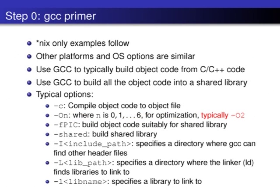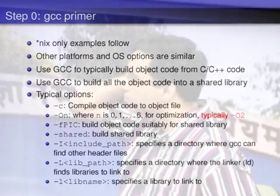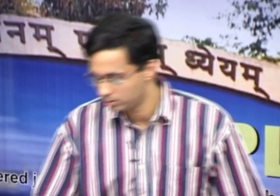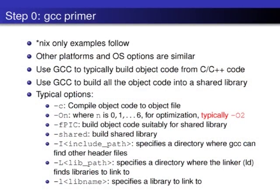Let's do a quick GCC primer. I'm only going to cover Unix since the lab session is also on Unix. On Win32 with Cygwin or MinGW things are pretty similar. I'm going to go through the details so you understand how it actually works underneath. A lot of this is made easier by using setup.py files, but I'm going to expose the underlying steps.